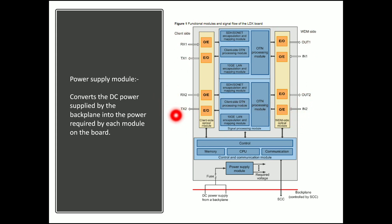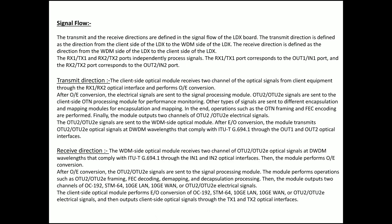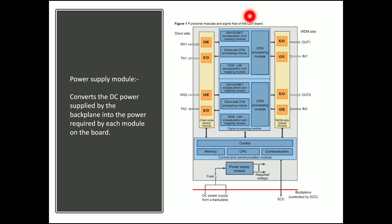Both ports work independently. In the transmit direction, the client side optical module receives two channels of optical signals — one from RX1 and one from RX2 — from the client equipment, and performs optical-to-electrical conversion. The electrical signals are then sent to the signal processing module. OTU2 signals are sent to the client side OTN processing module for performance monitoring, while other types of signals are sent to different encapsulation and mapping modules such as SDH, 10G LAN, or client side OTN processing.